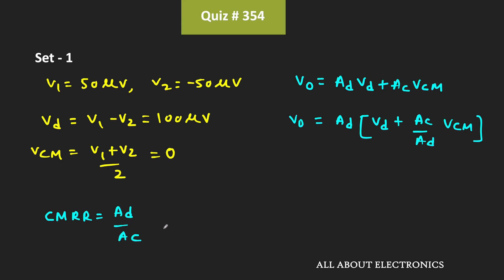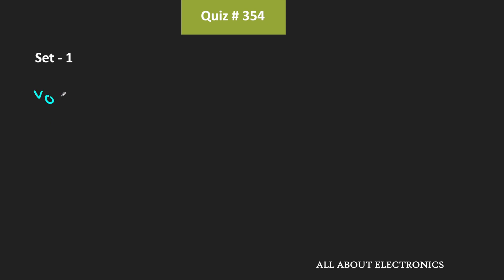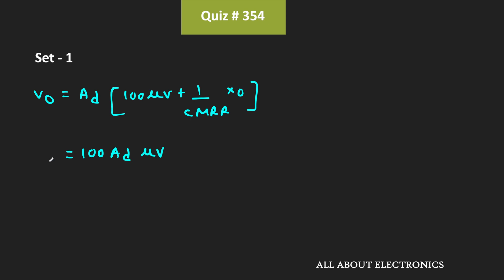For the first set of input signals, V1 = 50 µV and V2 = -50 µV. The differential component Vd = V1 - V2 = 100 µV, and the common mode component Vcm = (V1+V2)/2 = 0. So the output voltage V01 = Ad times [100 µV + (1/CMRR) times 0] = 100 · Ad µV. For the first set of input signals, V01 = 100 · Ad µV.